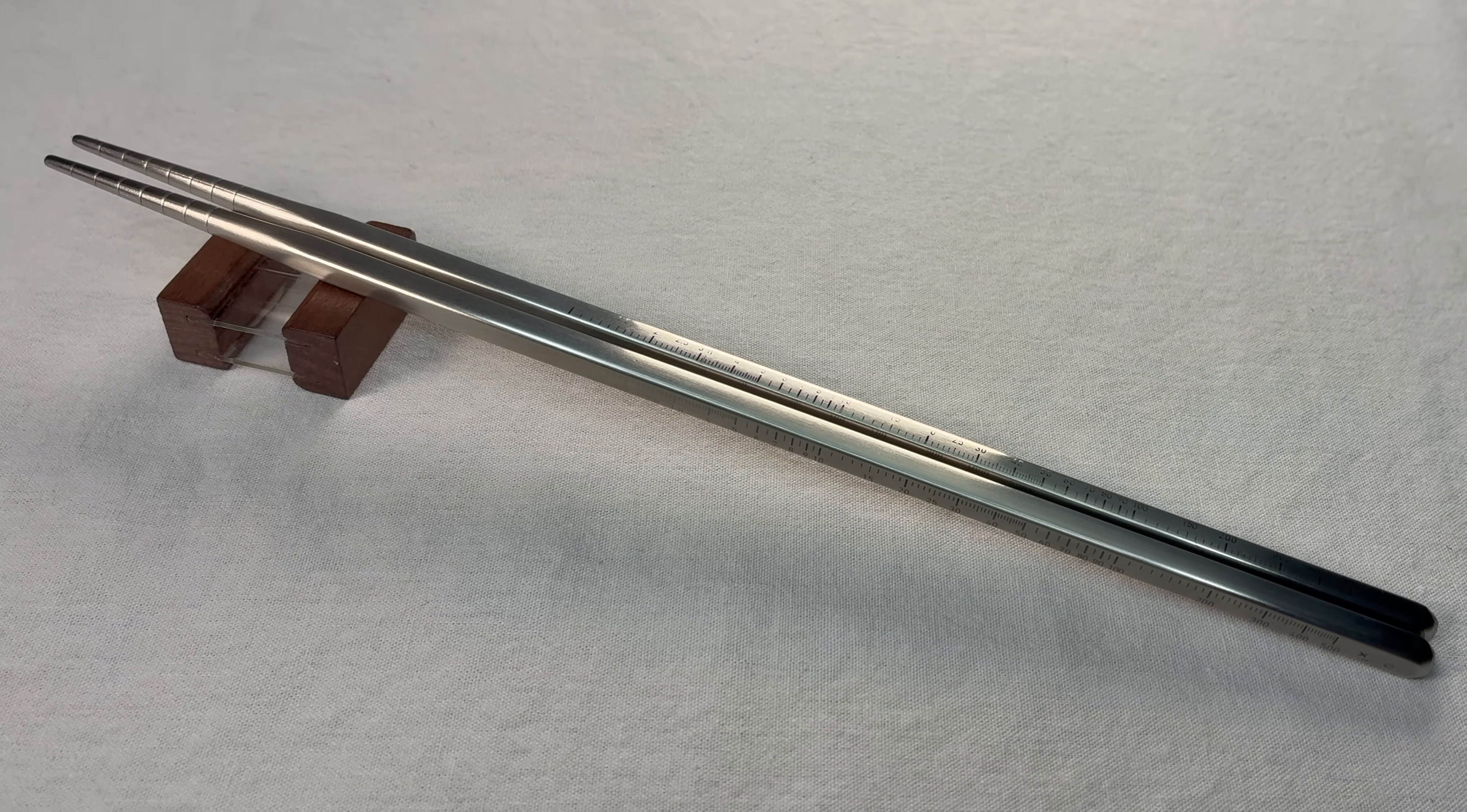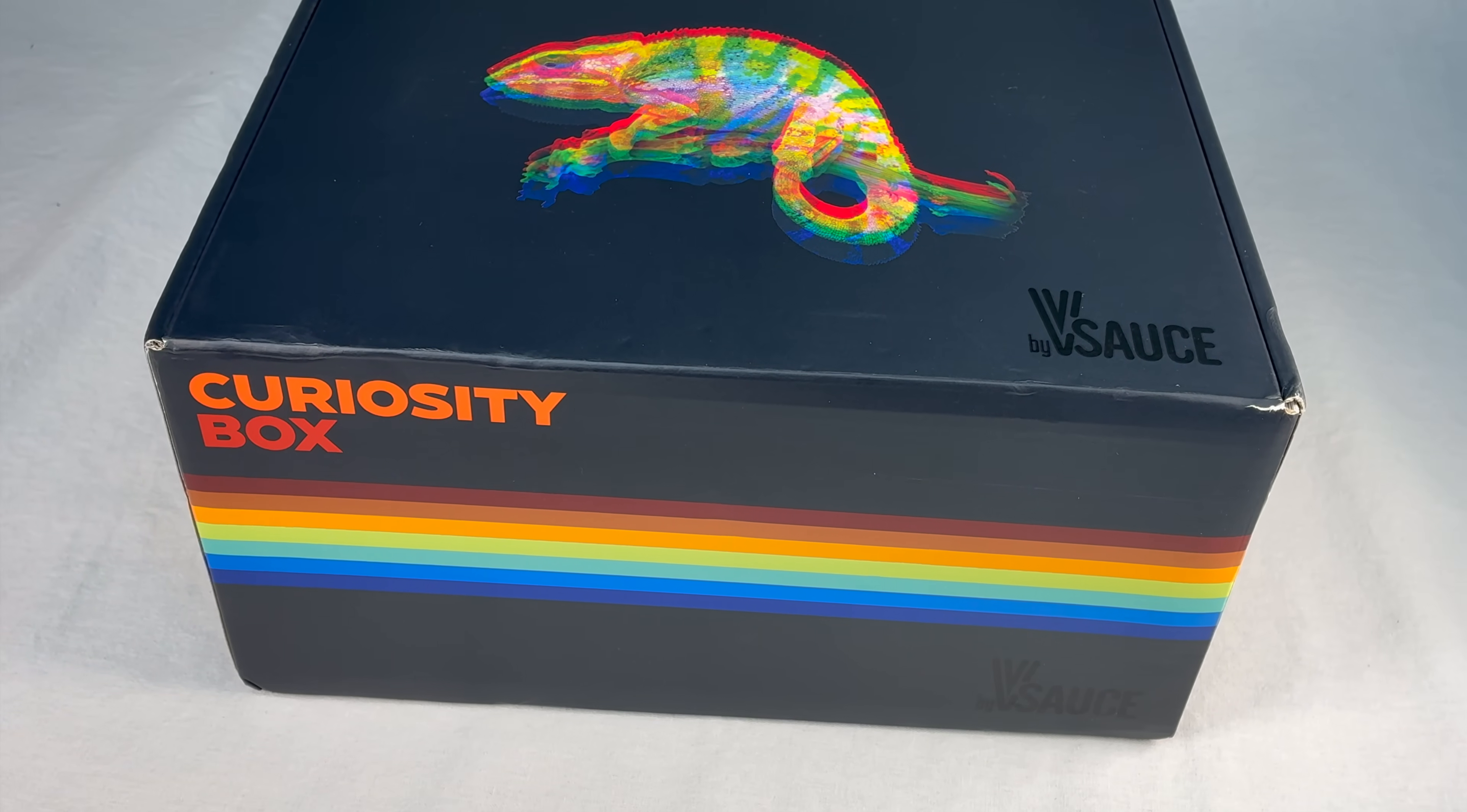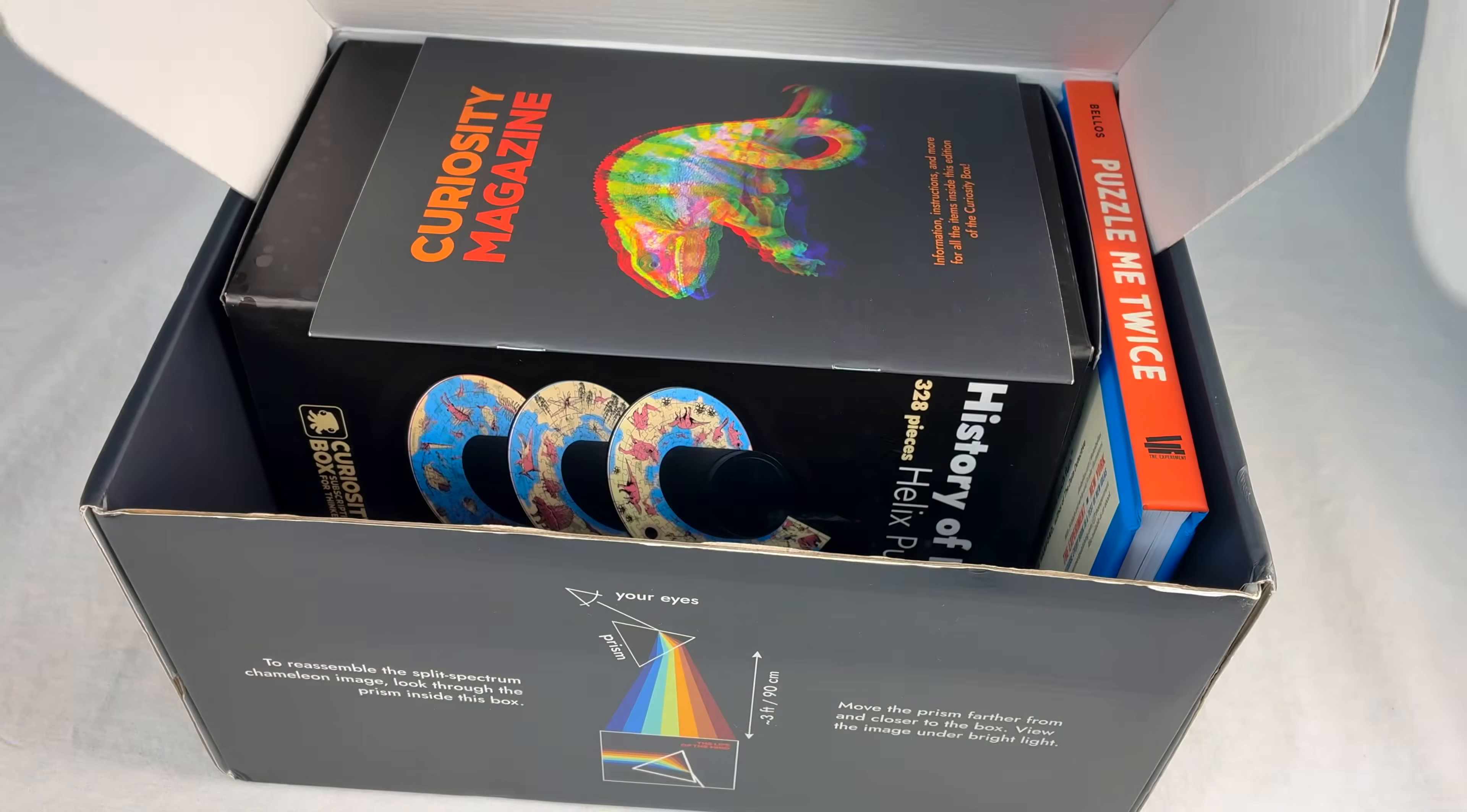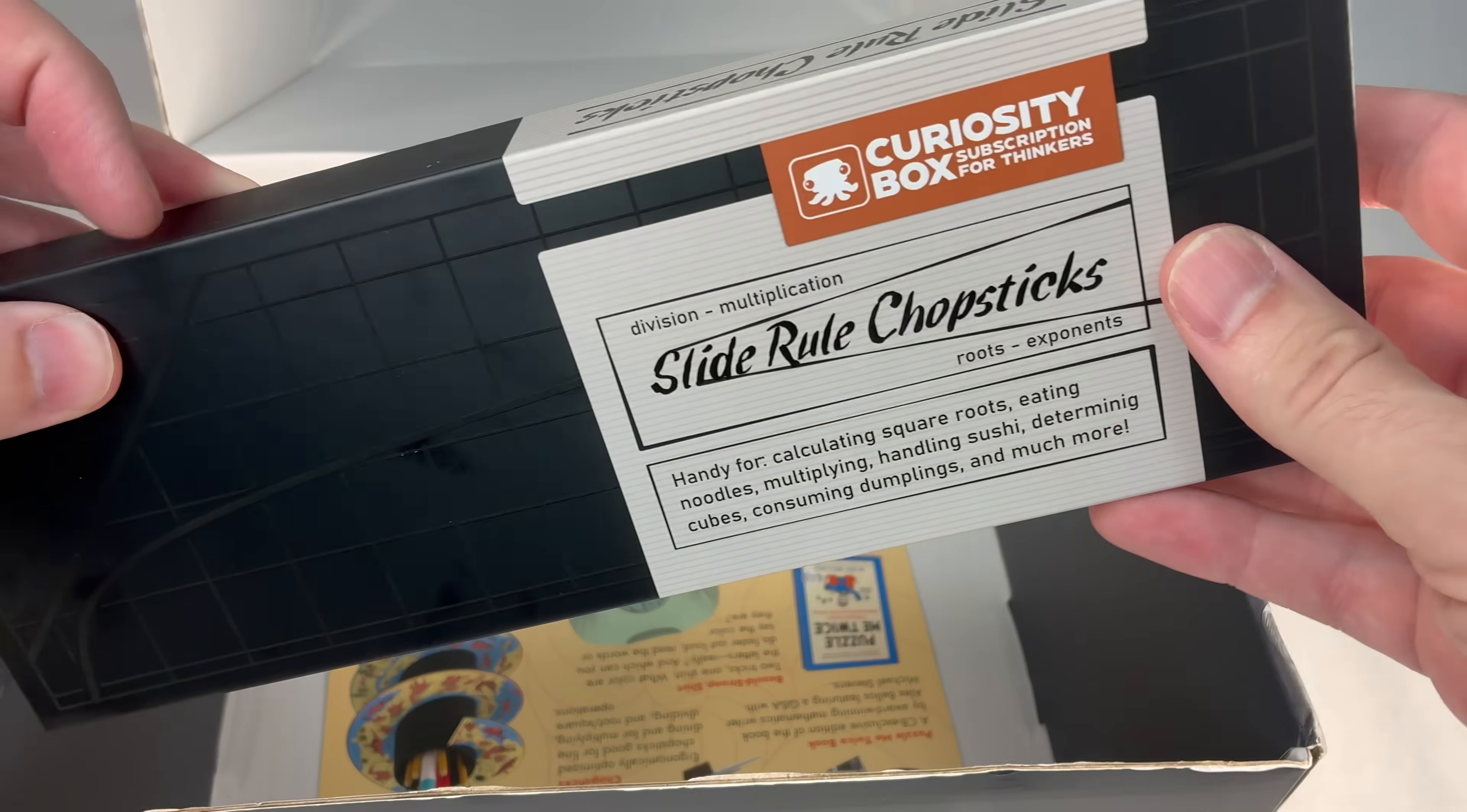These actually come in the latest Curiosity Box. It's a subscription box with math and science type stuff in it, good for teenagers or older folks, made by some YouTube guy. You get a box of stuff every three months. This one had a book of puzzles, a t-shirt, a helical jigsaw puzzle which is pretty cool, a prism, and of course the slide rule chopsticks.